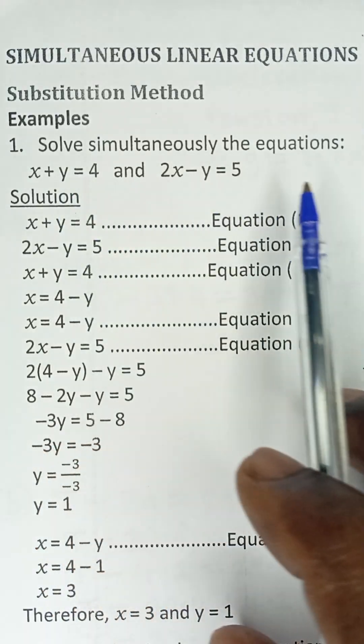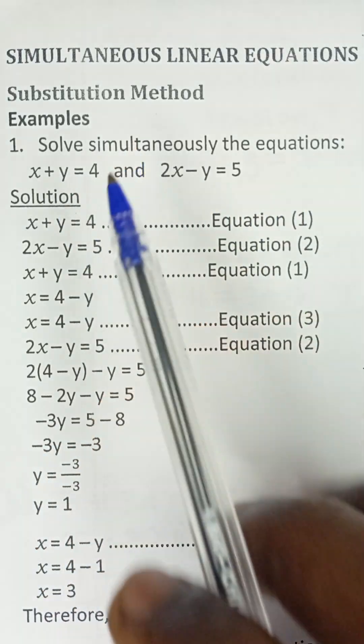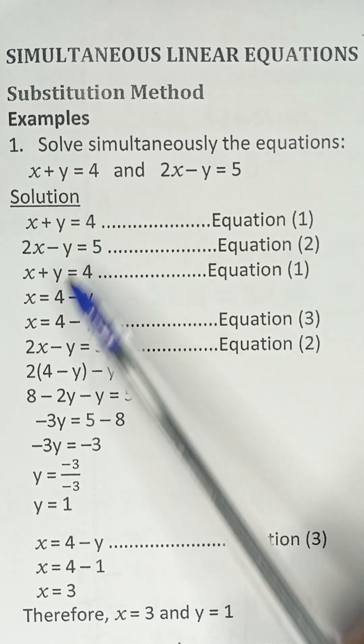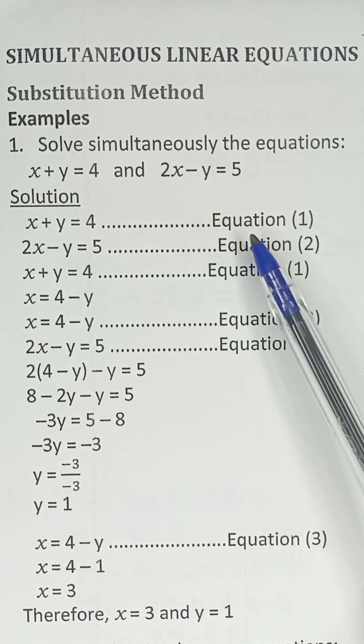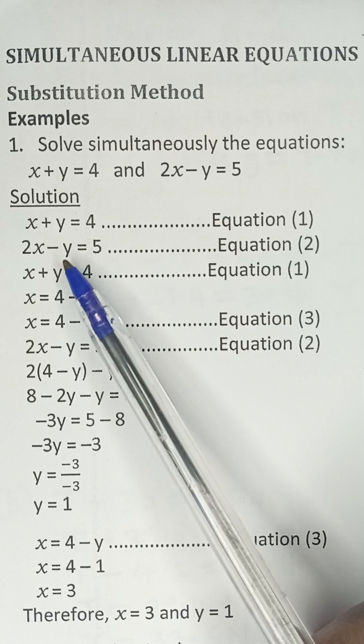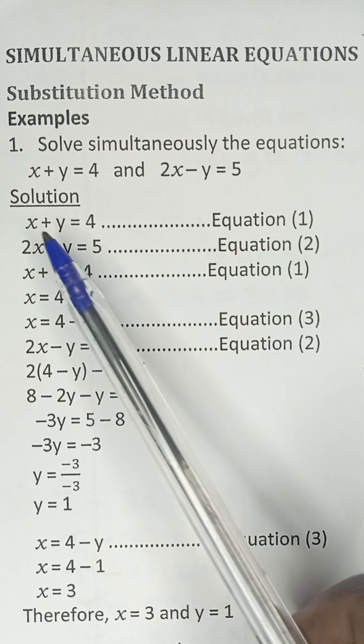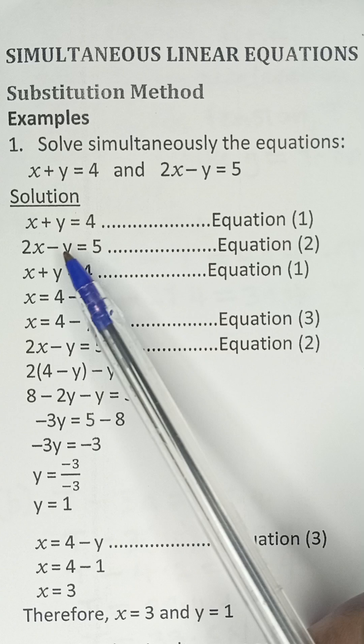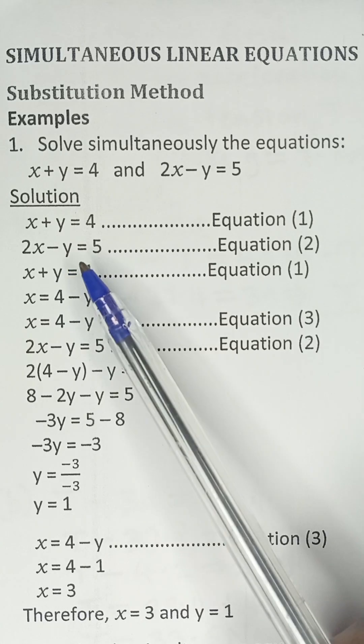We have to solve this simultaneous equation using the method of substitution. The first equation is x plus y equals 4, that is equation 1. And the second equation, 2x minus y equals 5, is equation 2.